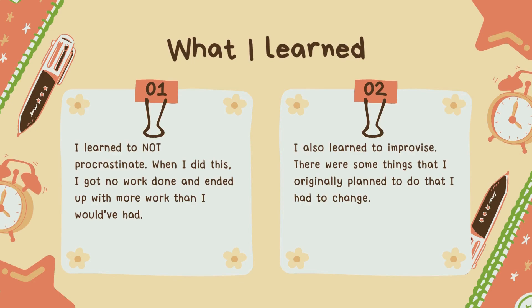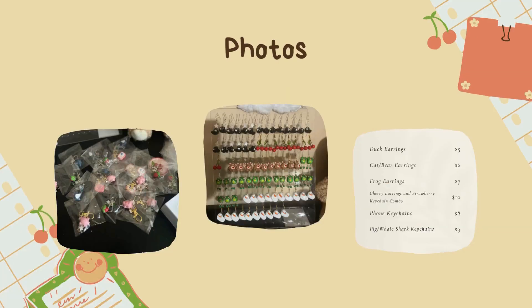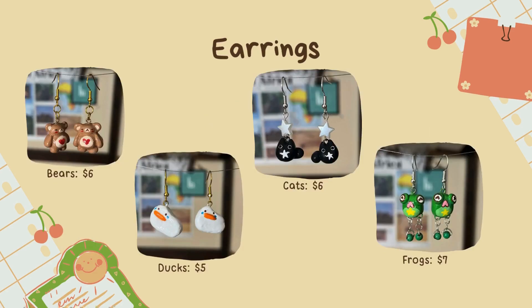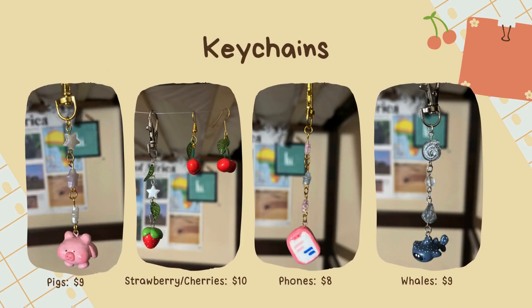What I learned: There were many things that I learned throughout the course of the project. However, there are two main things I want to discuss. Number one, I learned to not procrastinate — when I did this, I got no work done and ended up with more work than I would have had before. Number two, I also learned to improvise, as there were things I wanted to do at the beginning of the project that I had to change. Here are some photos of all of the keychains and earrings and the prices. Here are some close-up pictures of each earring and the prices. Here are some close-up pictures of the keychains and the prices.